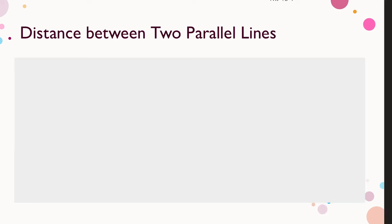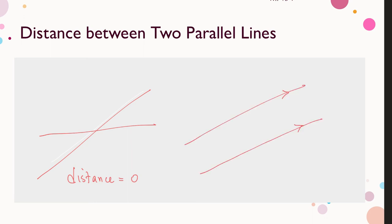The distance between two lines is the smallest distance between two points, each taken from the respective lines. For two intersecting lines, the distance is 0. For two parallel lines, the smallest distance is the perpendicular distance from a point on one line to the other line. We can use the distance formula to find the distance between two parallel lines and derive another formula.